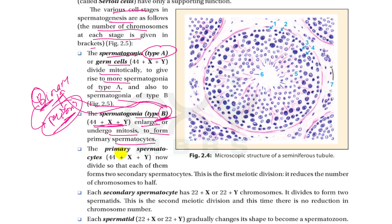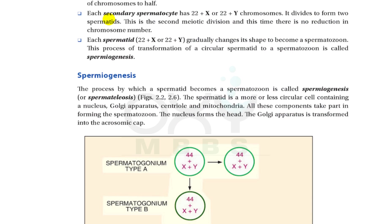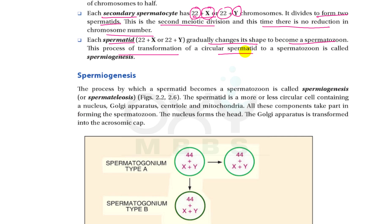Primary spermatocytes are also diploid cells. The first meiotic division in the primary spermatocyte reduces the chromosome number by half, forming secondary spermatocytes, which are haploid with 22 autosomes plus either an X or Y chromosome. The second meiotic division then occurs with no further reduction in chromosome number, forming two spermatids from each secondary spermatocyte.